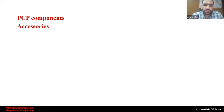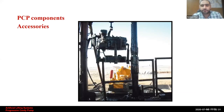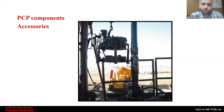In addition to the essential system components, some accessories can be added for additional functions. The first is the tubing drain valve. In many cases the rotor may get stuck inside the stator, and the tubing will be full of fluids up to the surface. If the pulling unit proceeds to pull out the pump in this situation, all fluids will come to the surface making a mess on the rig floor. To avoid this, we dump the tubing fluid into the casing-tubing annulus using a tubing drain valve.